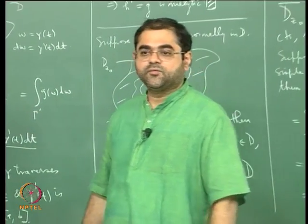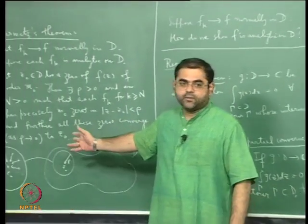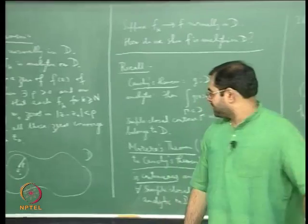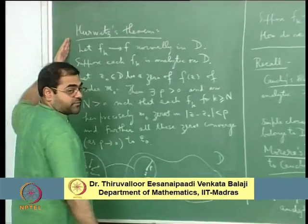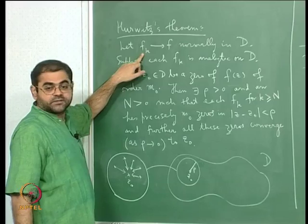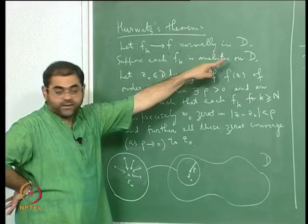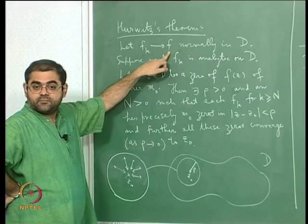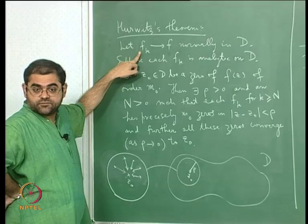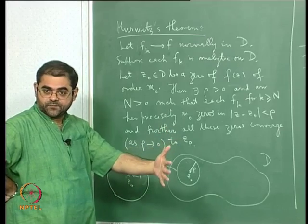What we are going to do now is look at a proof of Hurwitz's theorem and probably an application of Hurwitz's theorem. Let me again recall what Hurwitz's theorem says. In short, it says that if you have a sequence of analytic functions that converge to a function normally in a domain, then a zero of the limit function is obtained as an accumulation point of the zeros of the functions in the sequence, beyond a certain stage.